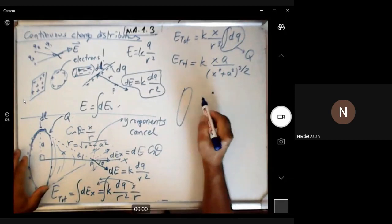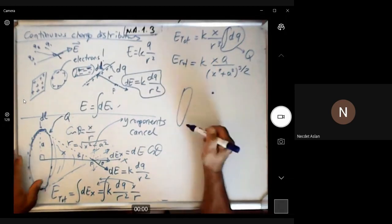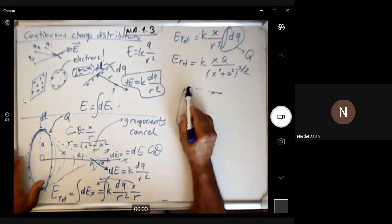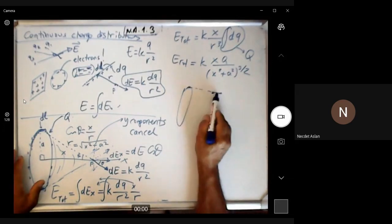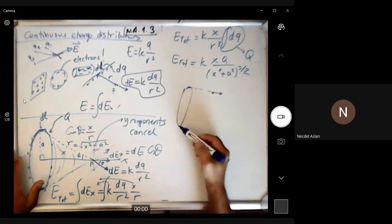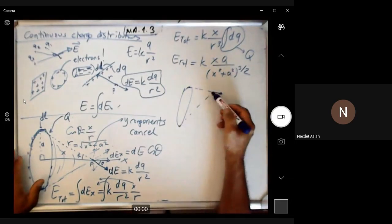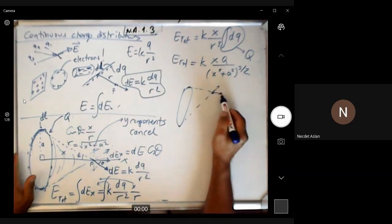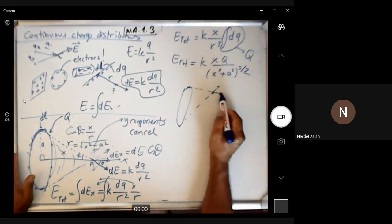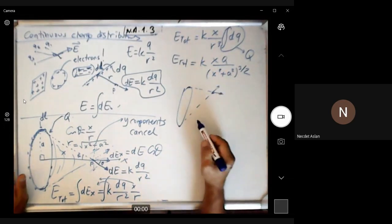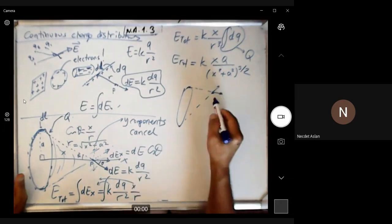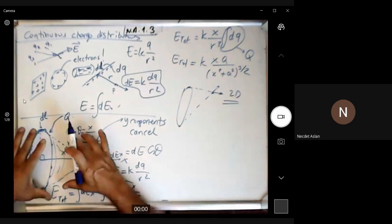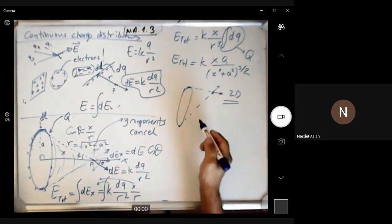If we asked for the electric field at an arbitrary off-axis point, the problem would be very difficult — the electric field from each segment would point in a different direction, the distances would differ, and it becomes a full two-dimensional problem. This ring example turned out to be one-dimensional and straightforward because of its symmetry.